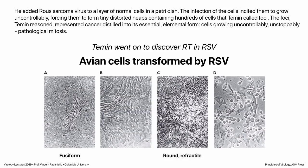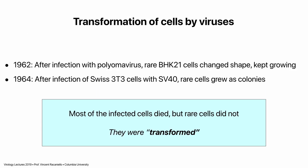Other milestones in the history of transformation: in 1962, baby hamster kidney cells were shown to be transformed after infection with a polyomavirus. And in 1964, SV40 — the virus we've talked about so much in molecular biology — was shown to transform mouse cells. Most of the cells died, but some rare cells did not; those were transformants that grew forever. So we have RNA and DNA viruses both transforming cells and making them immortal.